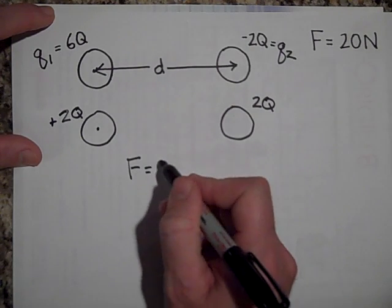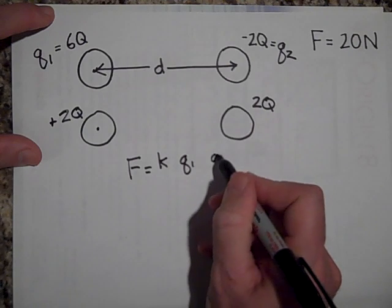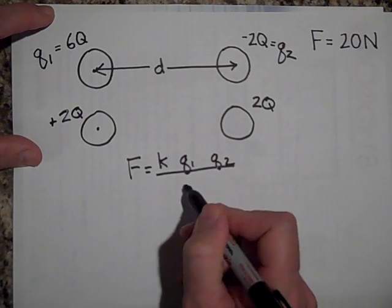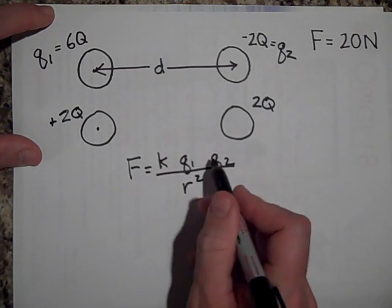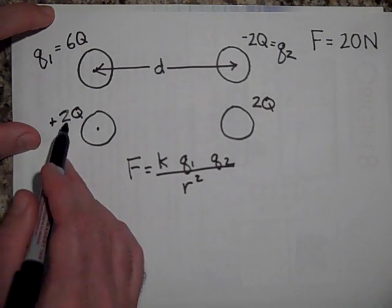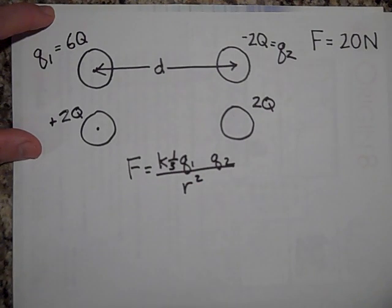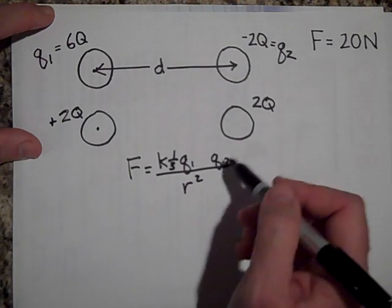Okay. The new force is gonna be K Q1 times Q2 all over R squared. Now look, I left that space there so that I could sneak some numbers in here. This went down by a third. So this is only a third of its old charge. So I put a one third there. And this is the same.